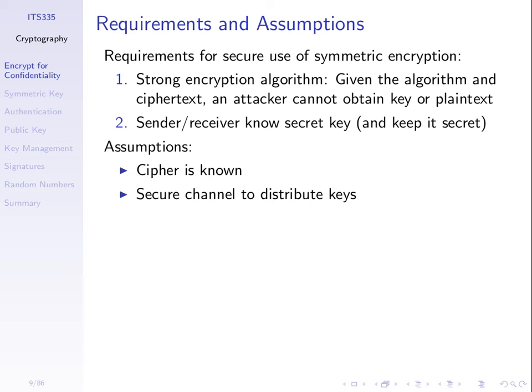At this stage, we'll assume that the keys used by user A and B are known by A and B and not known by anyone else — that is, they were distributed in some secure manner. That becomes a bit of an issue which will arise when we look at key management: how do we get the key from A to B? For now, we'll assume that B knows the key that A is using.